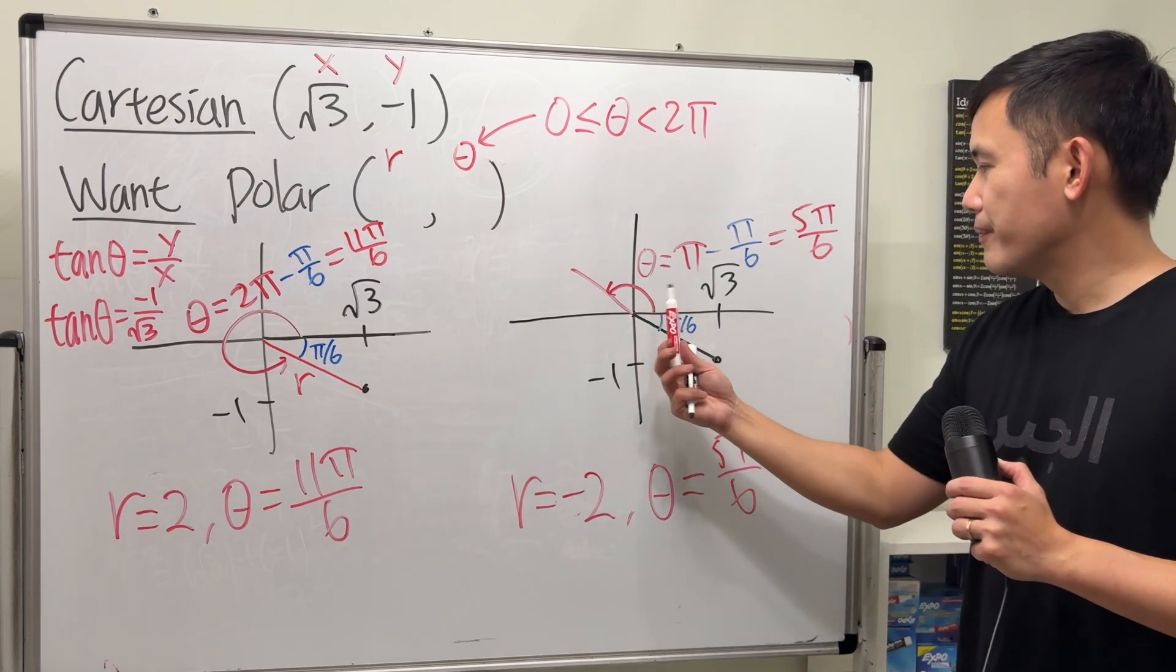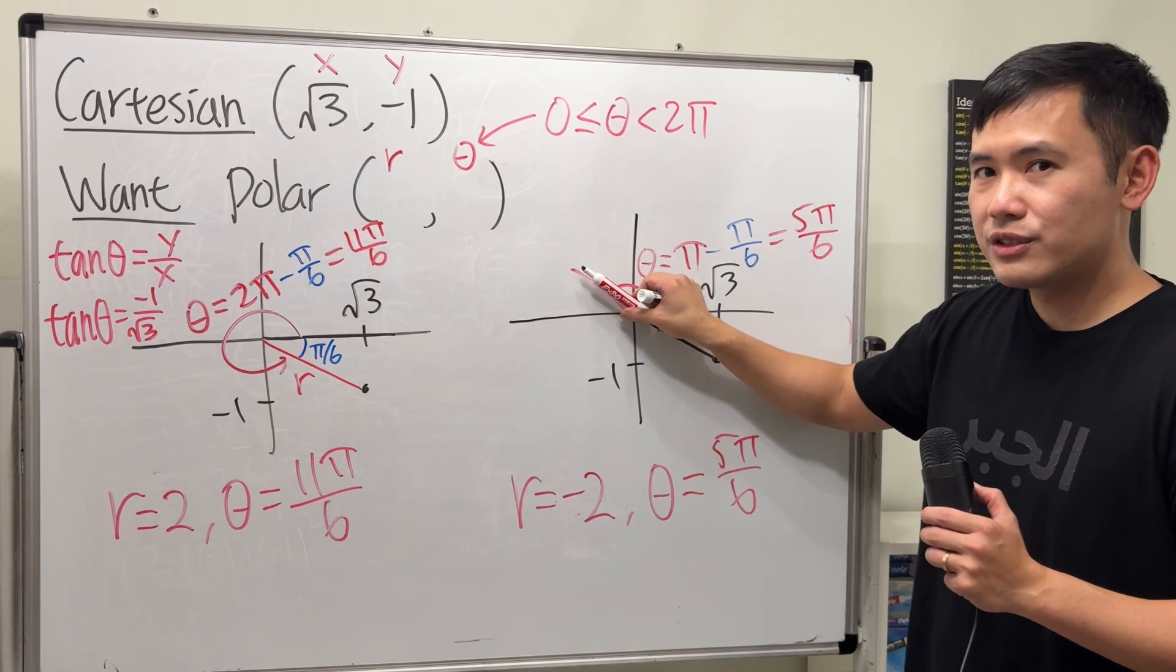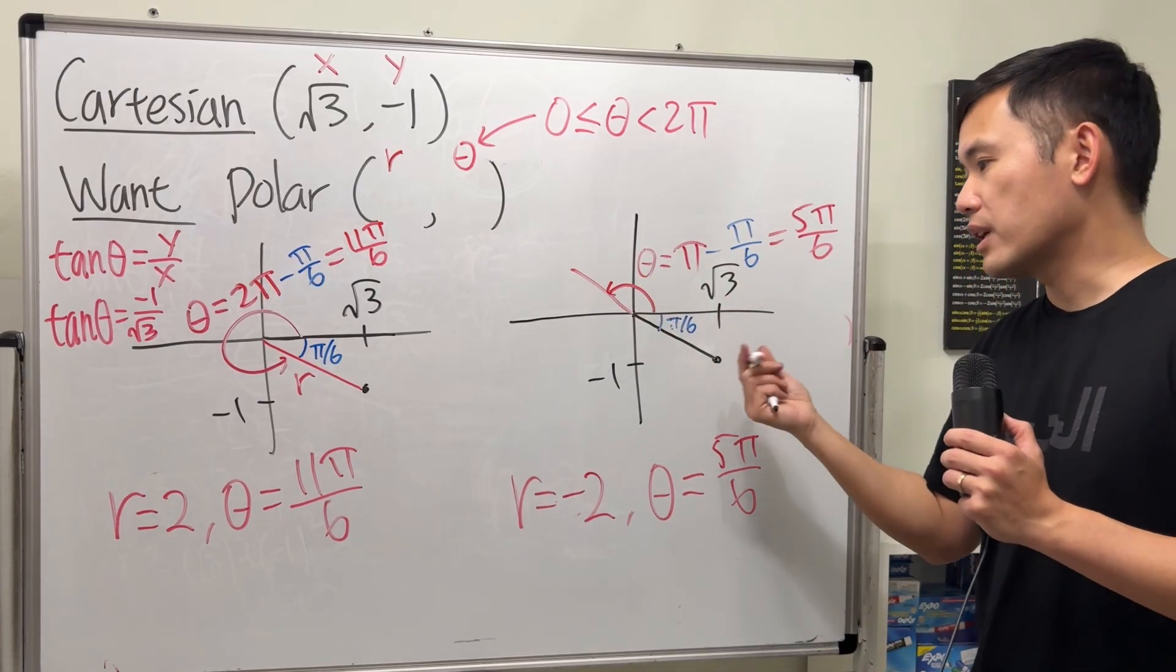So that means you turn to 5π/6 in this direction, and then you go backwards, and you can get to this point. And then we're done.